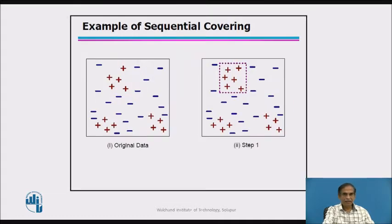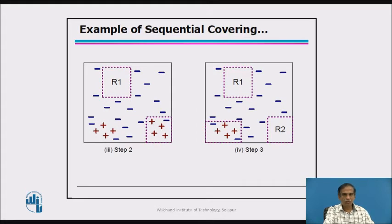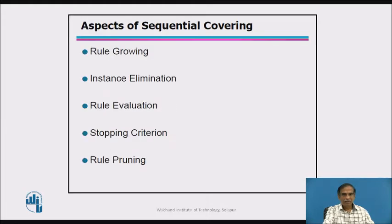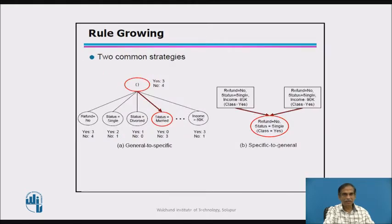In sequential covering, clusters of similar rules are identified and converted into rule form, then other positive clusters are found. The key components are: rule growing, instance elimination, rule evaluation, a stopping criterion, and rule pruning.